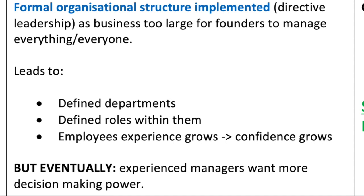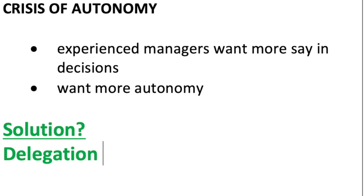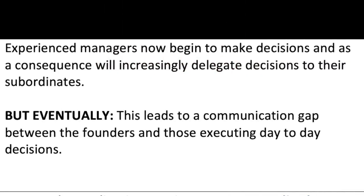The solution to the leadership crisis is to create a management structure, leading to growth through direction. Formal organizational structures — sometimes called directive leadership — are implemented. Defined departments are created, such as marketing, finance, and human resources, with defined roles within them. Employees' experience and confidence grow over time, but eventually experienced managers want more decision-making power, leading to the second revolutionary phase: the crisis of autonomy.